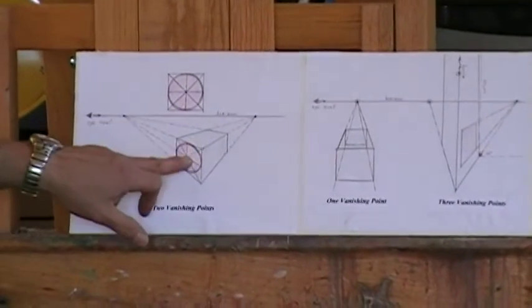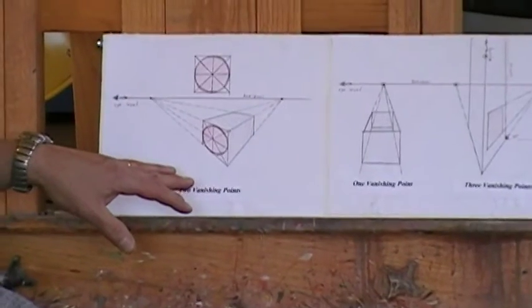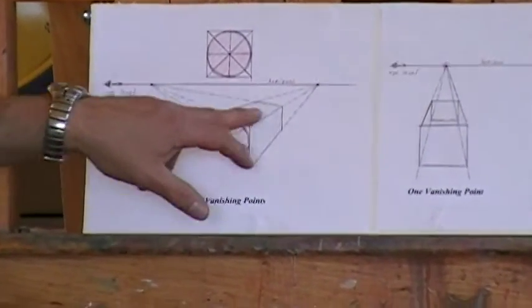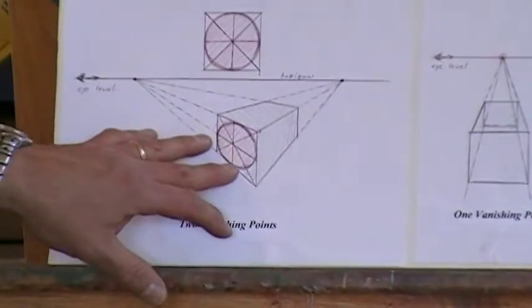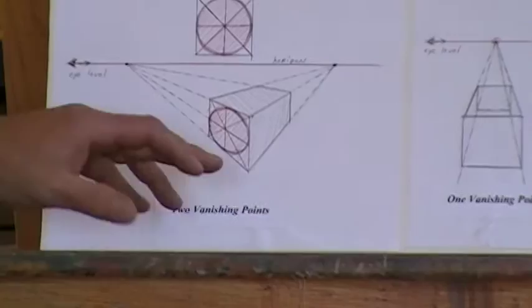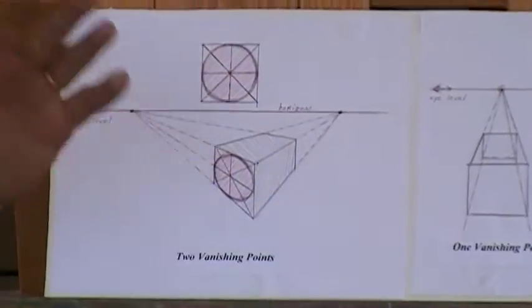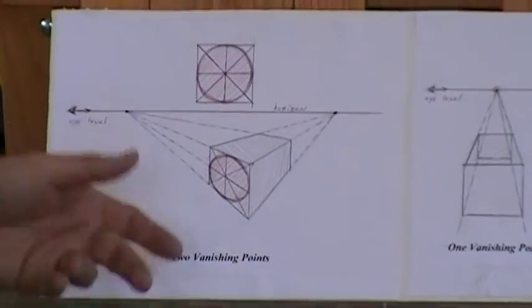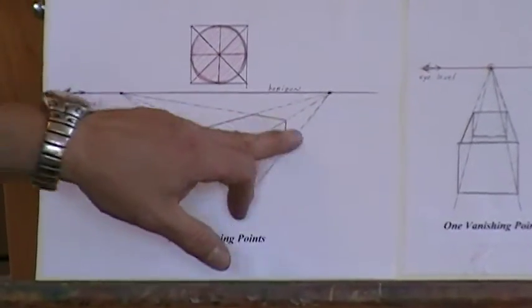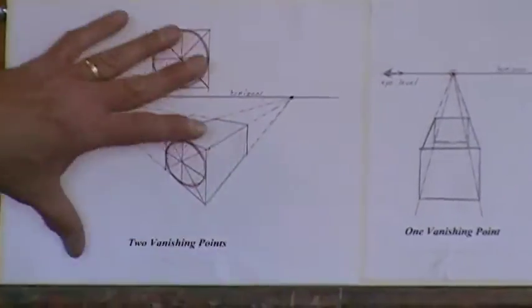And what I'm showing you here in the two point, which is the most common version of perspective, is essentially a box. And you can actually see there's two sides of the box. And as you recede in space, even though this side would be a square, like I'm showing you here, if it's basically facing you, as it recedes in space, the back side gets smaller than the front side. And the same thing for the top and for the other side.